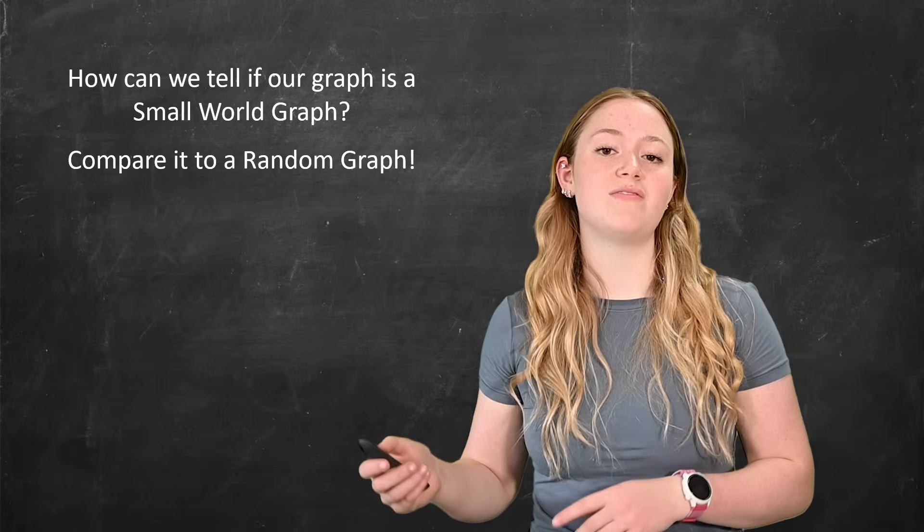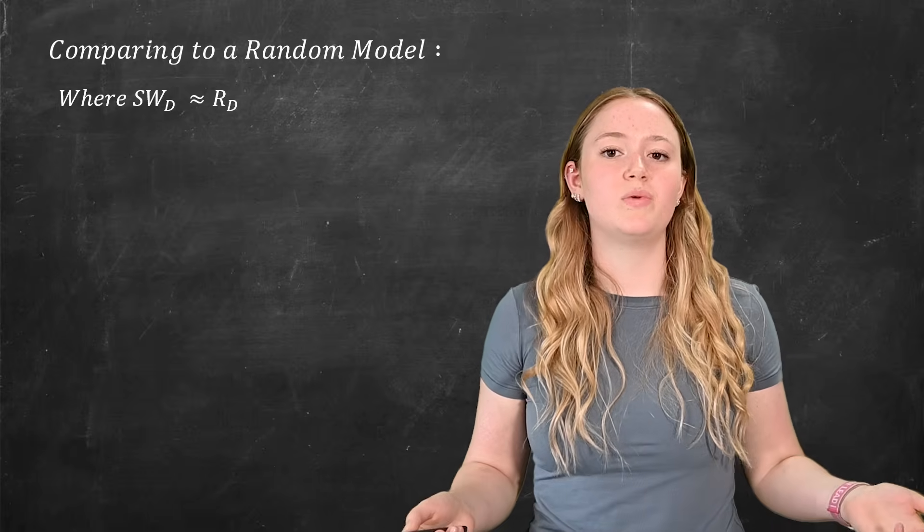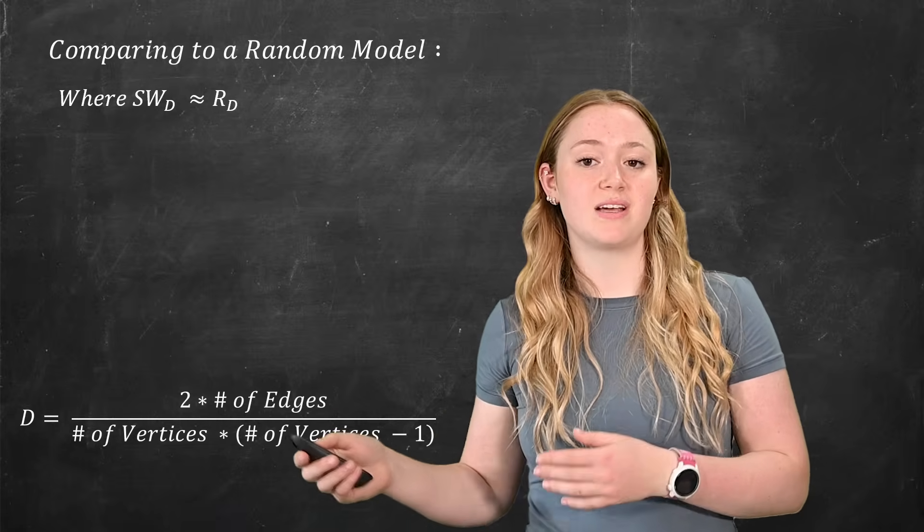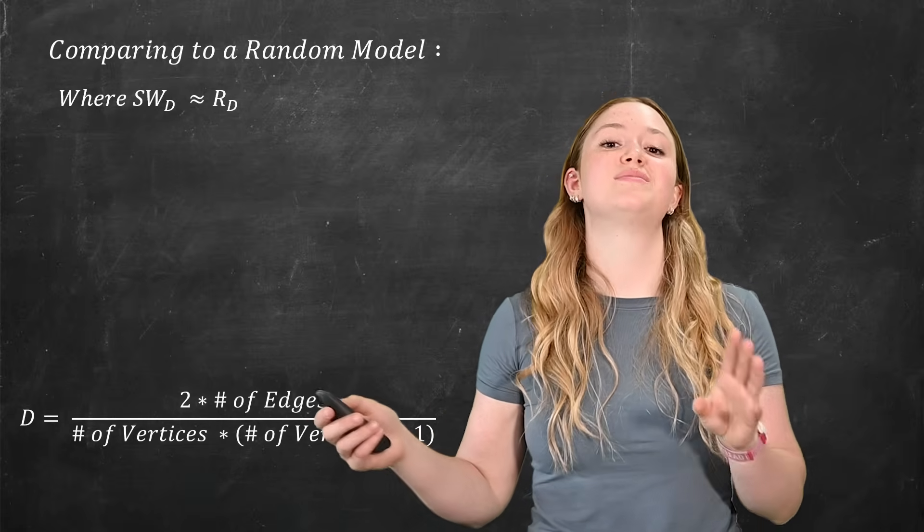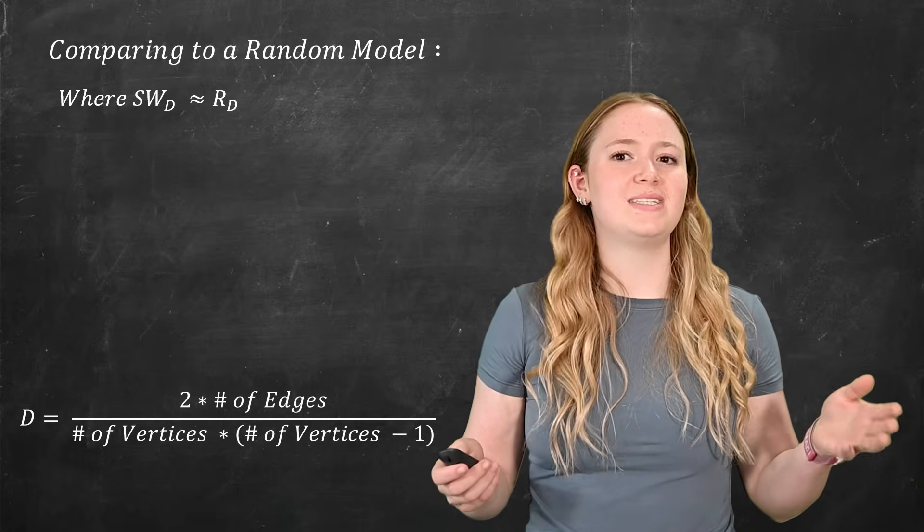But how do we choose which random graph to compare our suspected small world graph against? To do this, we choose a random graph that has an equivalent density as our small world graph. But what is density? We take two and we multiply it by the number of edges in the graph divided by the number of vertices times the number of vertices minus one.